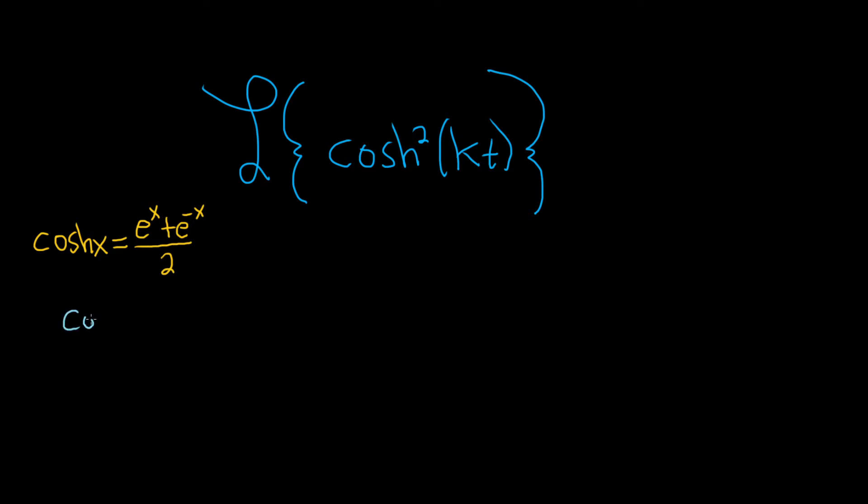So this would be the hyperbolic cosine of kt. And you just replace all of the x's with kt's. So it would be e to the kt plus e to the negative kt, all divided by 2.